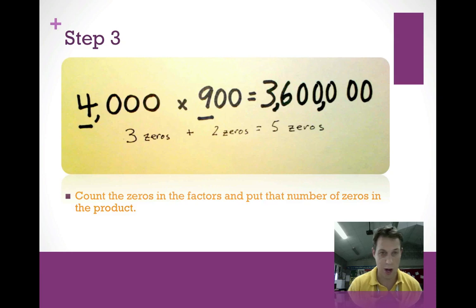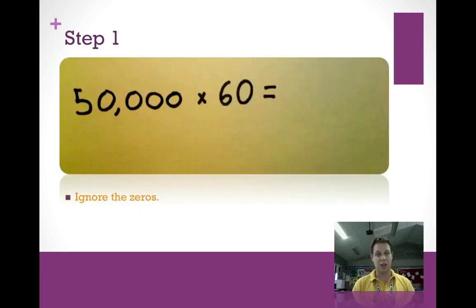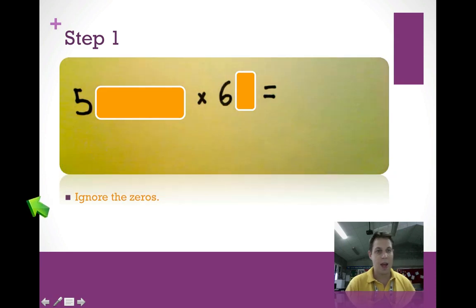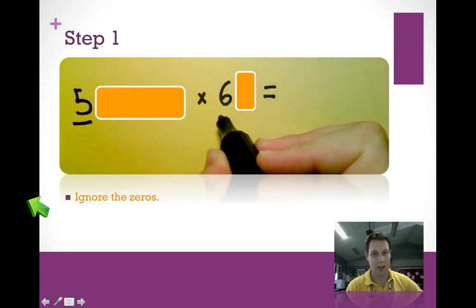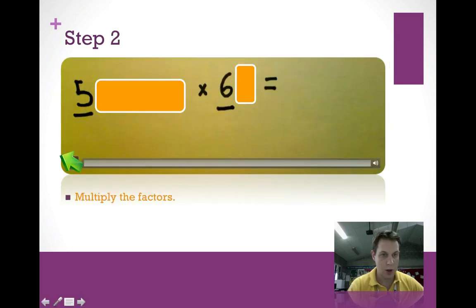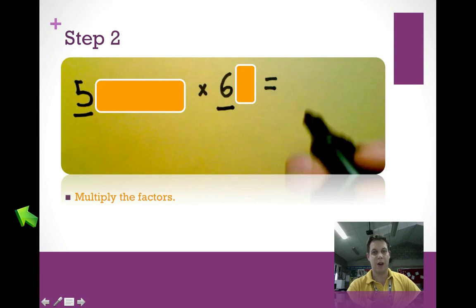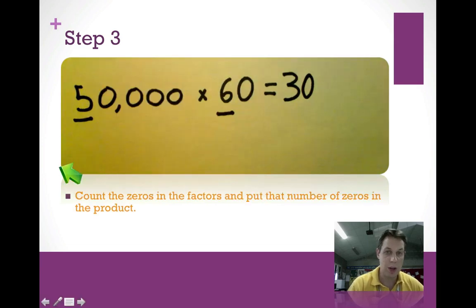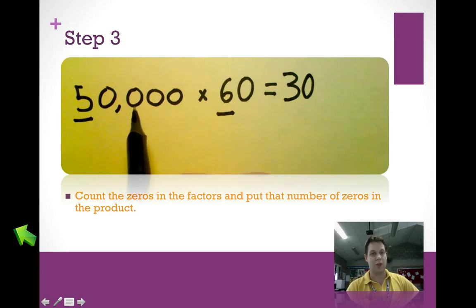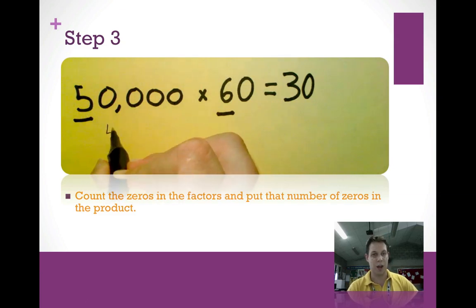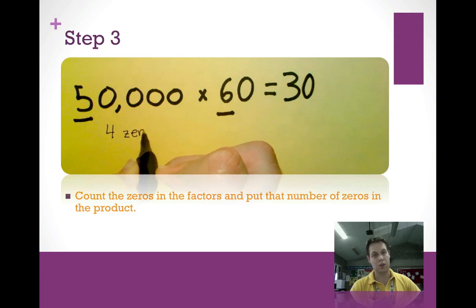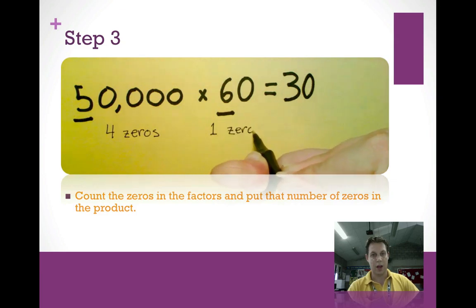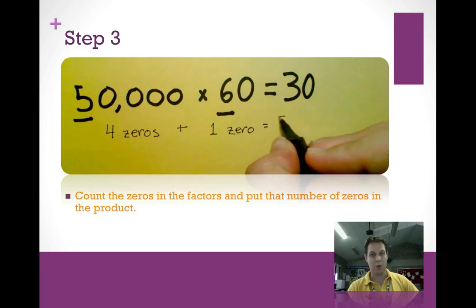Let's try another one for practice: 50,000 times 60. First, ignore the zeros and only focus on the 5 and the 6. Then multiply: 5 times 6 is 30. Then bring the zeros back — count four zeros in 50,000 and one zero in 60. Four plus one equals five zeros total.